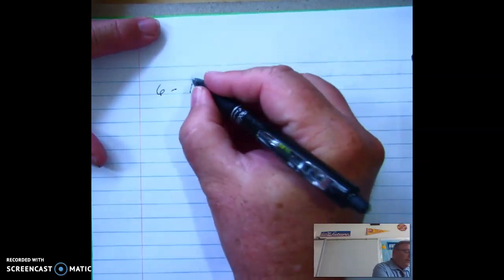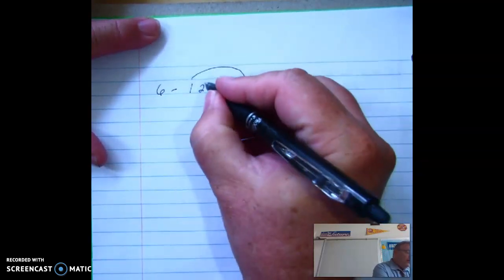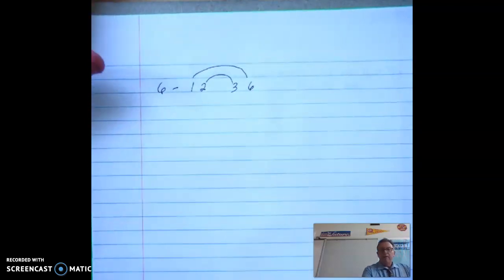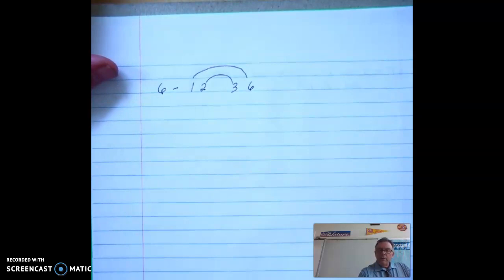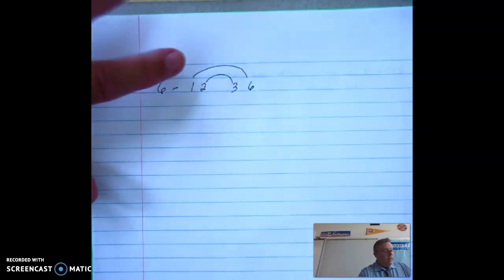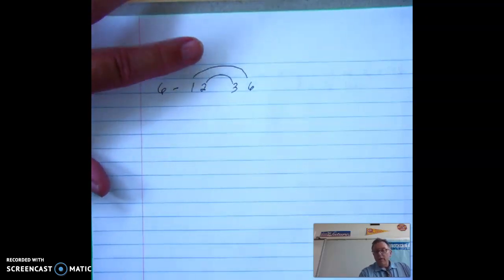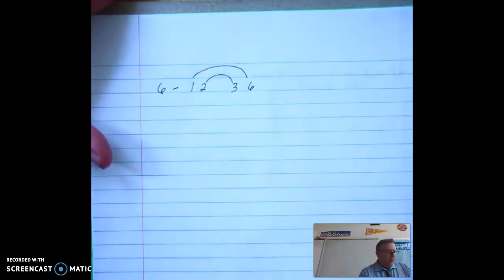Three. So now I've got one and six. I have two and three. I already have three. Does four go into six? No, does five go into six? No, I already have six. So my factors of six are one, two, three, and six.